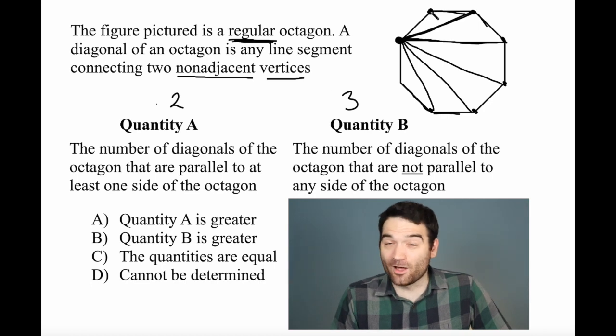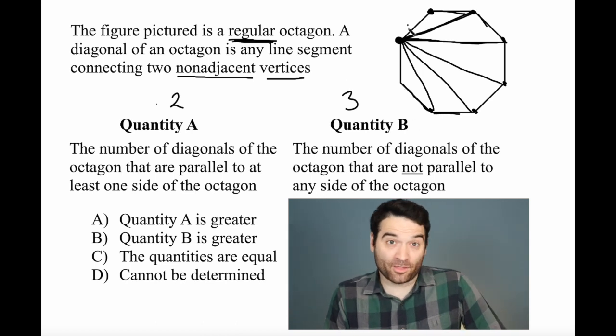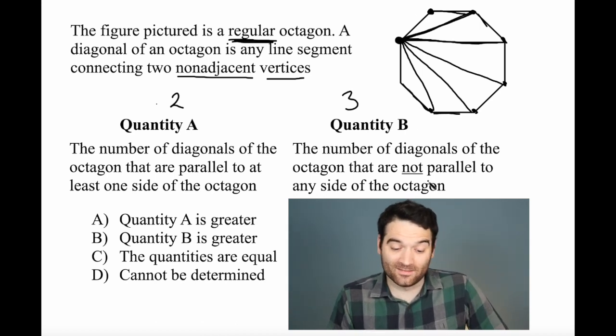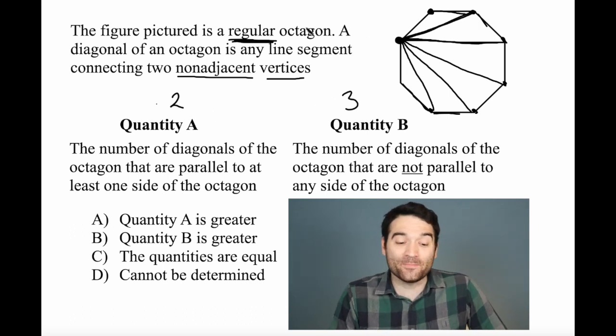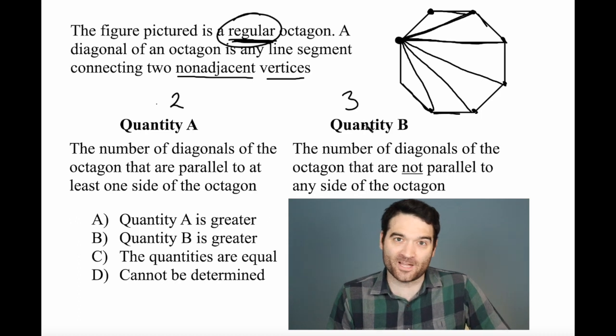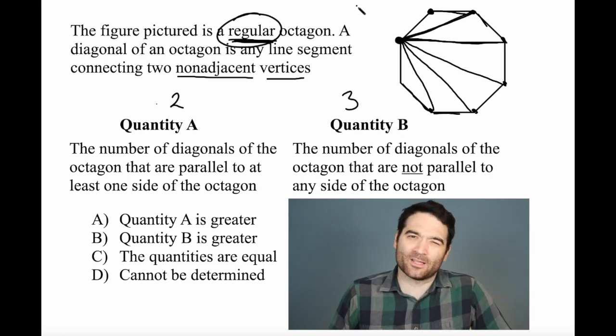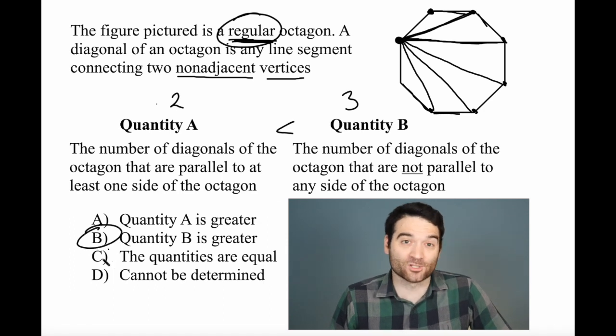Now, if I pick any other point on this octagon, it's going to be the exact same story. I'm going to have three non-parallel diagonals and two parallel diagonals. And how do I know that? Well, I know it because it's a regular octagon. If I spin this around, this picture is not going to change. It doesn't matter which point I pick. This is going to be identical every time. So that may be enough for you and it should be enough for you to say that quantity B is the correct answer, which it absolutely is.